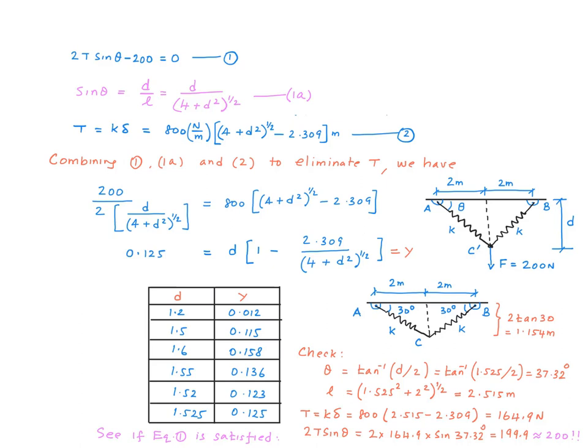I get a value of 164.49 N for that. Then I want to come back to equation 1 and see if equation 1 is satisfied. So I've calculated 2T times sin theta and came up with a number very close to 200.